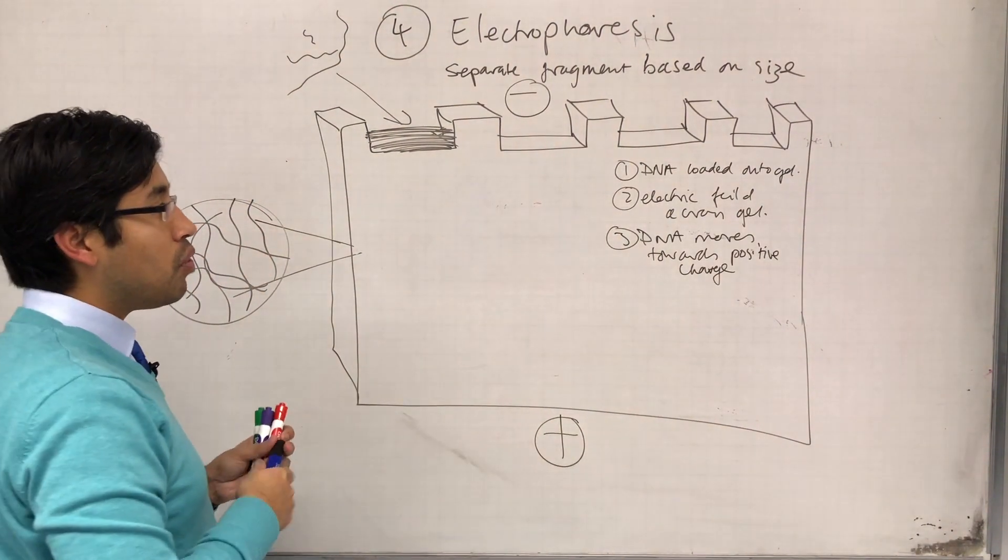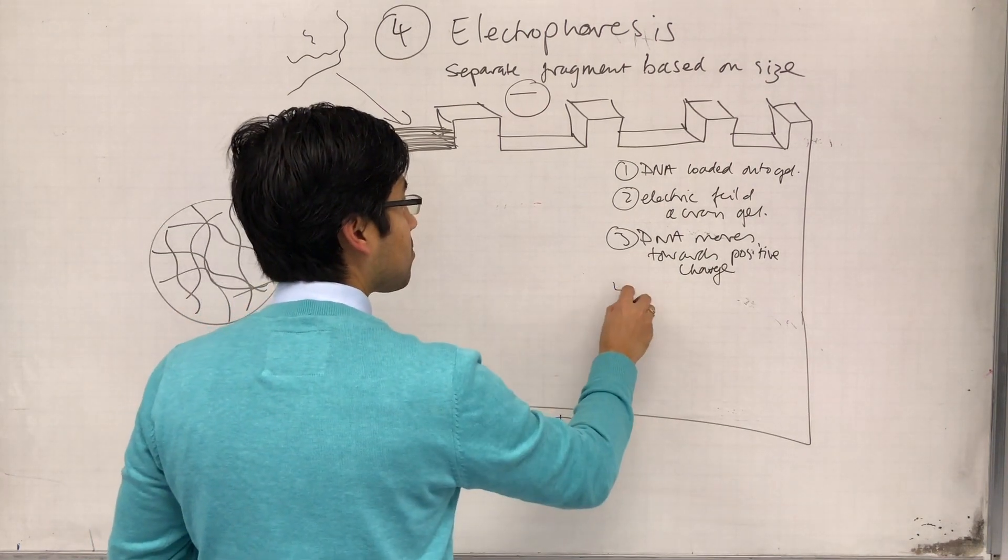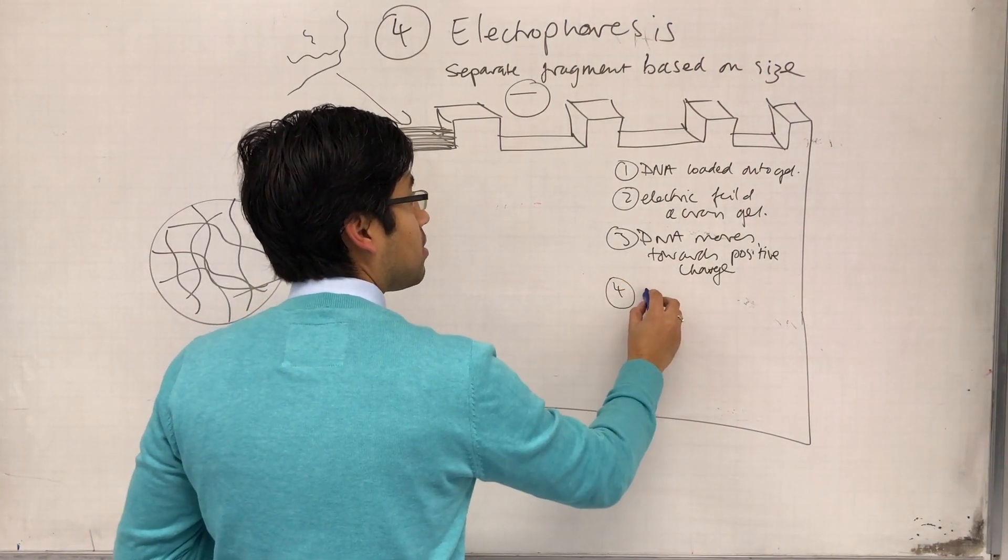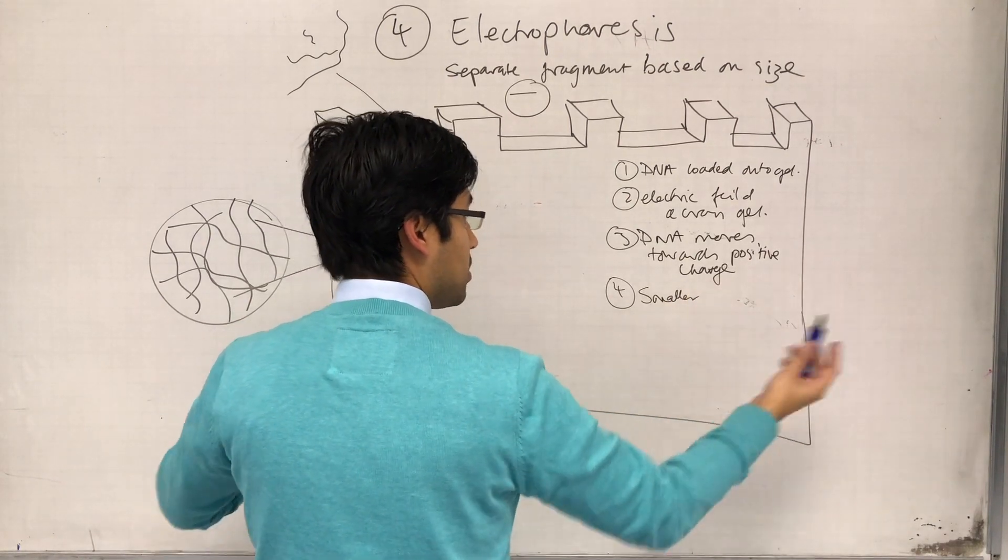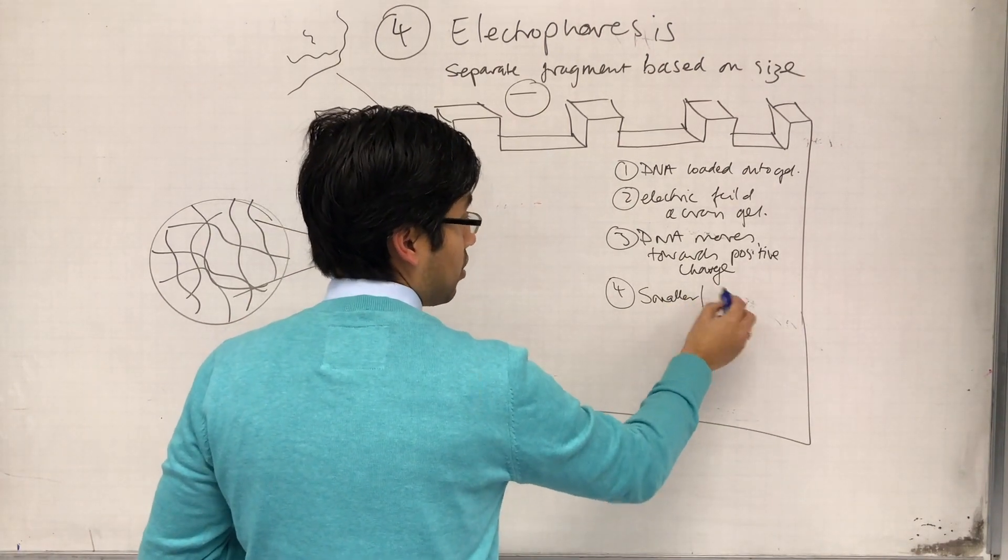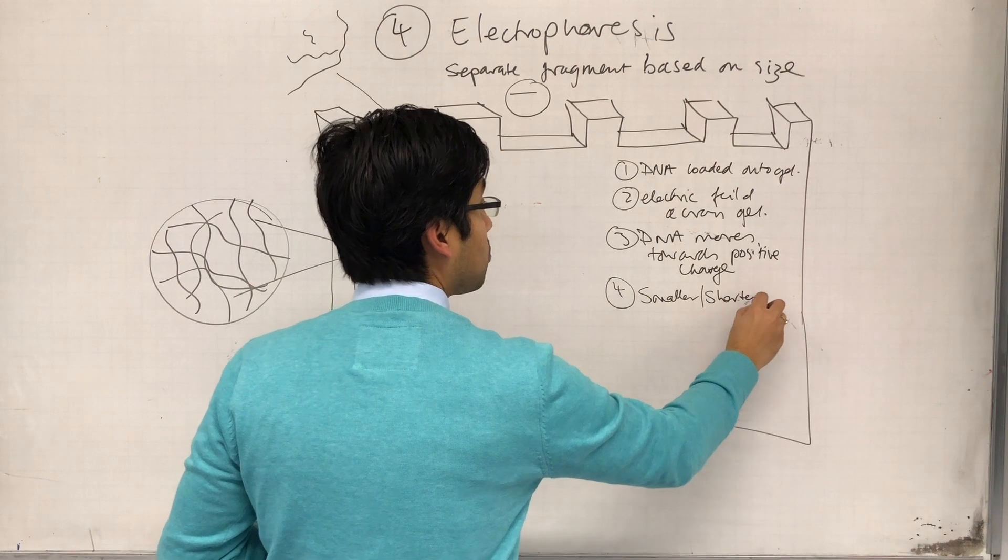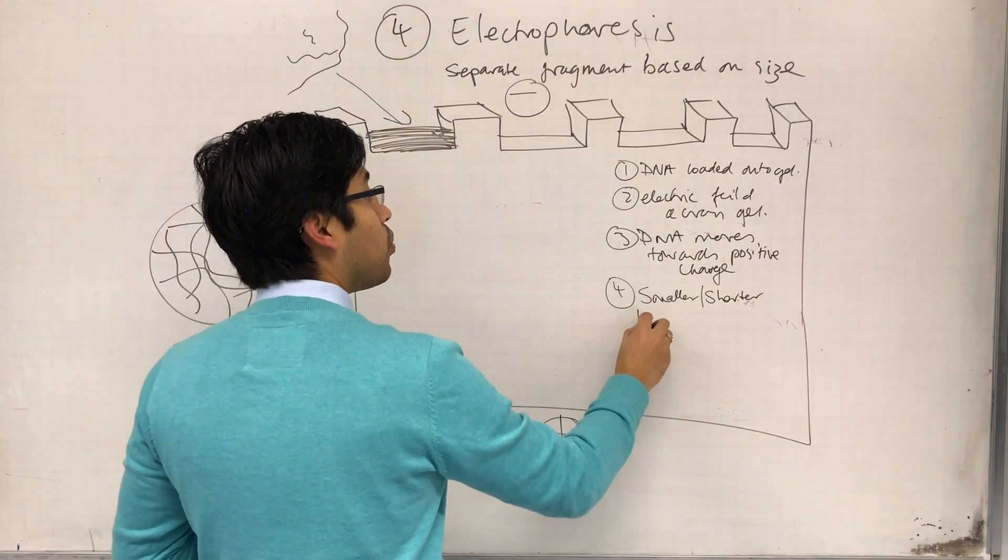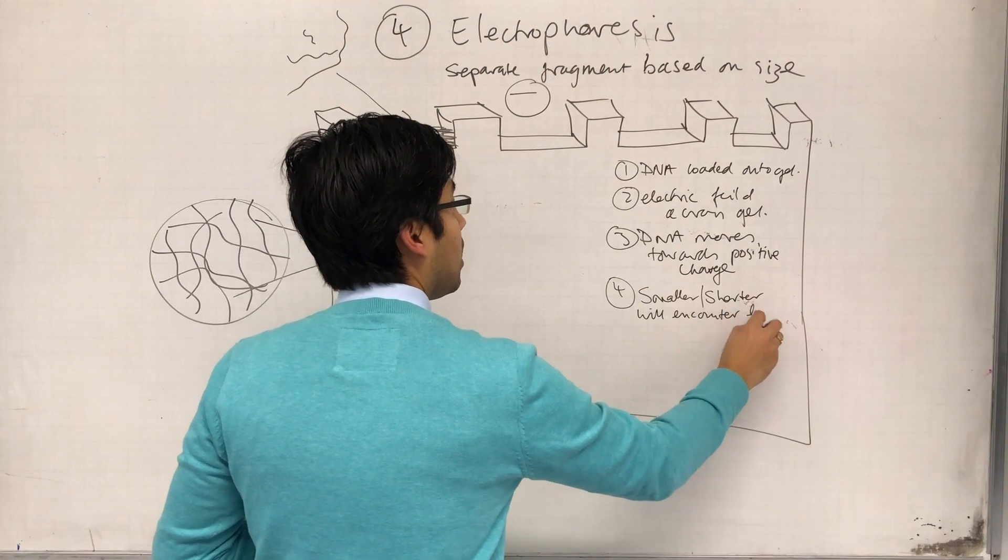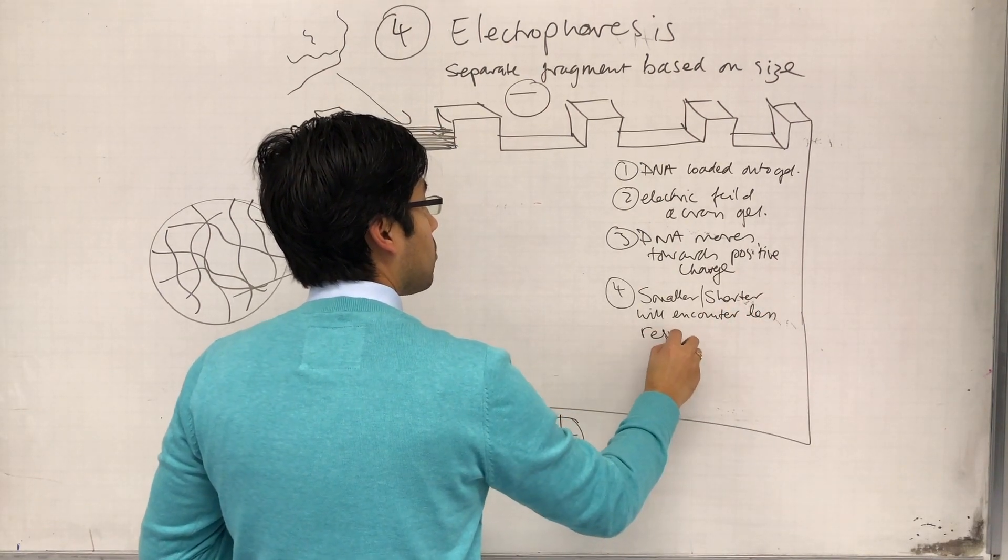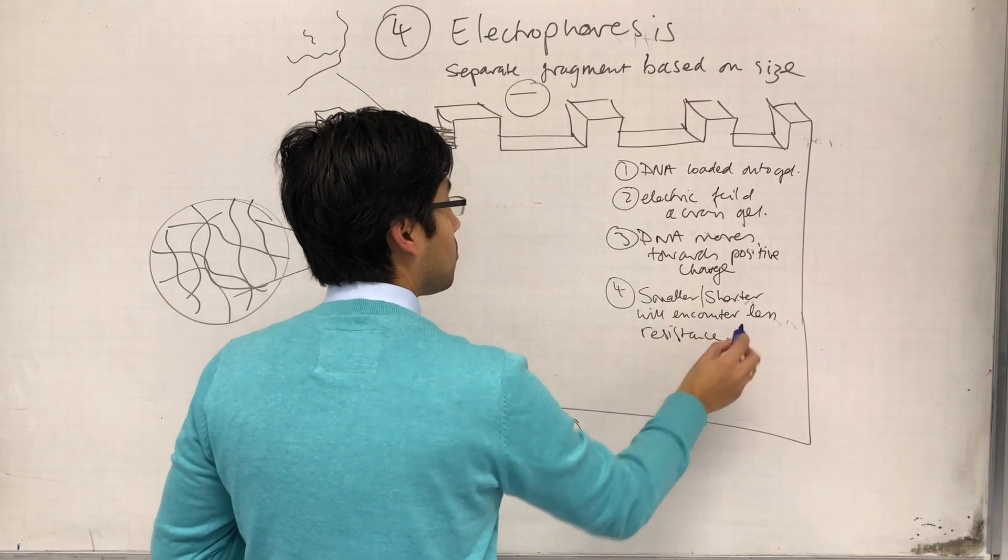And this is the key point: what results in separation is that smaller DNA molecules, or shorter DNA molecules I should say, will encounter less resistance from the gel.